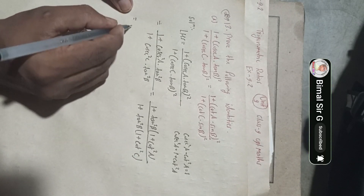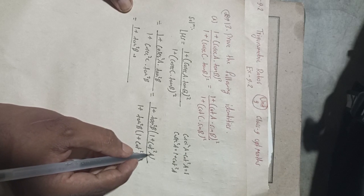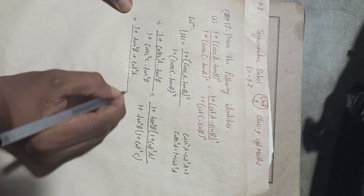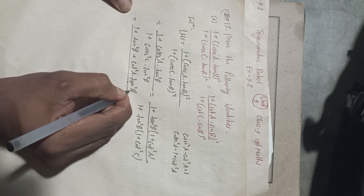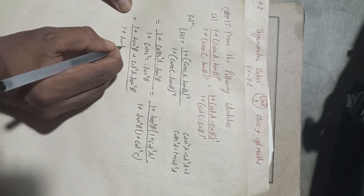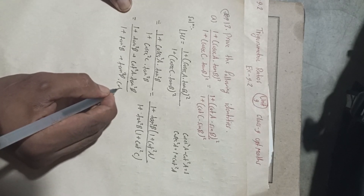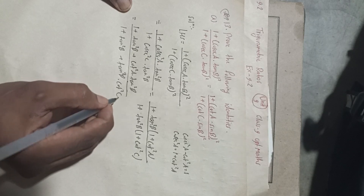Now expanding: the numerator gives 1 + tan²B + cot²A · tan²B, and the denominator gives 1 + tan²B + cot²C · tan²B.